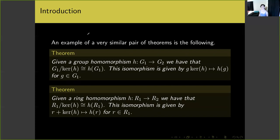An example of a very similar pair of theorems is the following — both formulations of what some call the first isomorphism theorem, or the homomorphism theorem, or the factor theorem. Given a group homomorphism H taking a group G1 to G2, we have that G1 modulo the kernel of this homomorphism is isomorphic to the image of G1 under H, which is a subgroup of G2. This isomorphism is explicitly given by mapping the coset containing g of the kernel of H to the image of g under H, for any given g in G1.